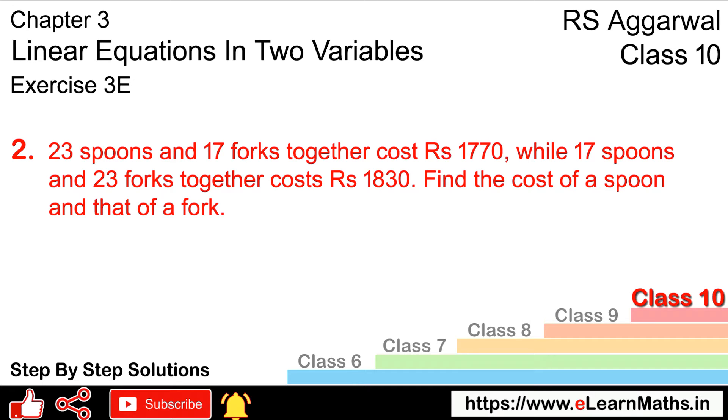Let's do question number 2 of exercise 3E, that is linear equations in two variables. Question number 2 is: 23 spoons and 17 forks together cost rupees 1770. While 17 spoons and 23 forks together cost rupees 1830. Find the cost of a spoon and that of a fork.